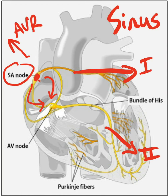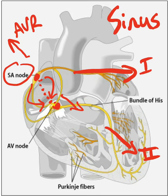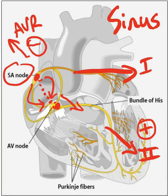If electricity goes from the sinus node to the AV node, the vector of electricity is moving in this direction. Looking at Lead 2, this electrical activity is going towards it, so it is positive. Looking from Lead AVR, it's on the opposite side — electricity is going away from it.